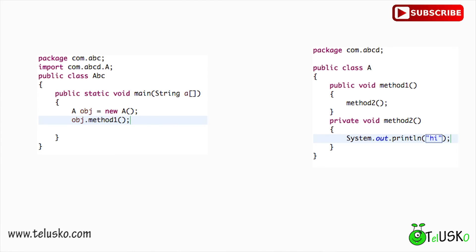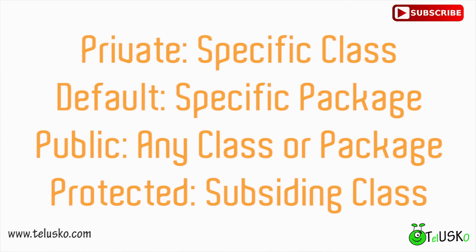You can also make methods private. For example, if you have two methods in a class and you want to call the second method only from the first method, you can make the second method private because you don't want others calling it directly. So if you make any variable or method private, you can access it only from the same class — not outside the class, not even from another class in the same package. Private means same class only. Default means same package only.